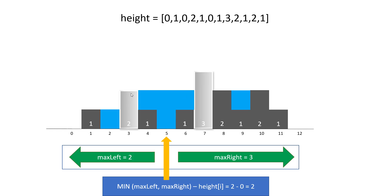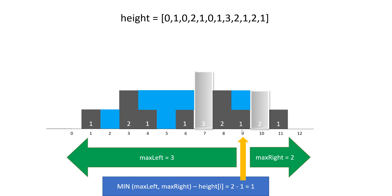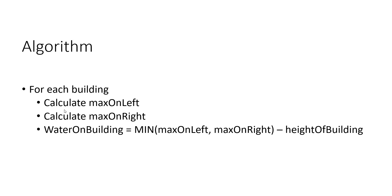The water accumulated at index 5 would be the valley formed by the maximum on the left and the maximum on the right. Since the maxes are different, it would be the minimum of these two maxes. And since the height of this bar is 0, it would not affect our answer. But if we see index 9, we need to subtract the height of that bar. So the gist is: find max left, max right, take the minimum of both, then subtract the height of the building at that index.